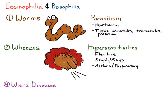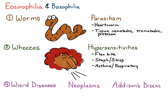Cats can get feline asthma, horses can get heaves, and dogs get canine eosinophilic bronchopneumopathy. And now for our last category, weird diseases. That includes a variety of neoplasms as well as Addison's disease, also known as hypoadrenocorticism.